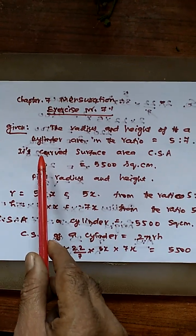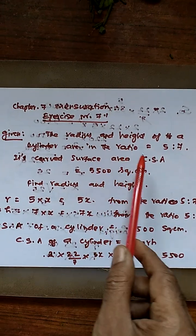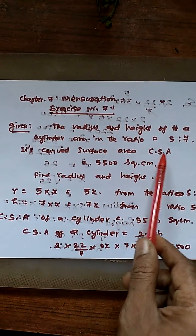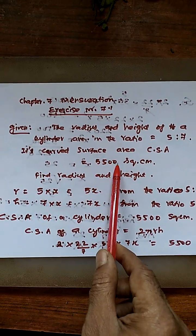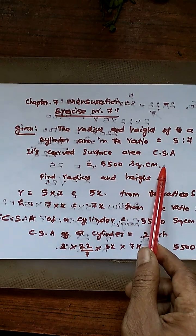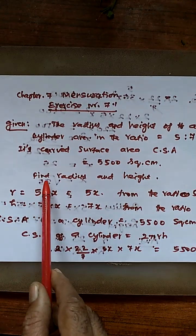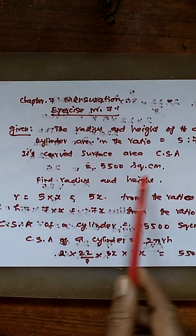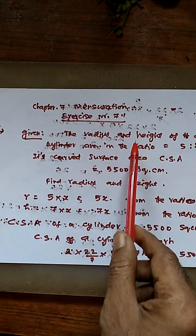The curved surface area is 5,500 square centimeters. We need to find Radius and Height.